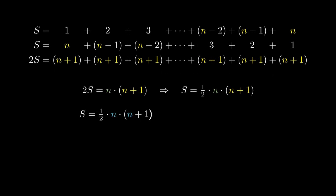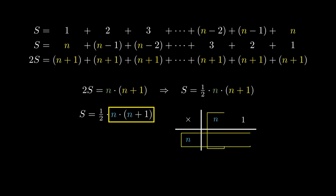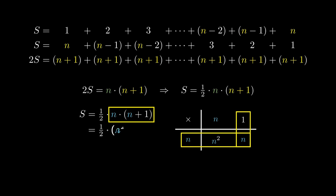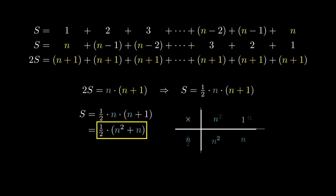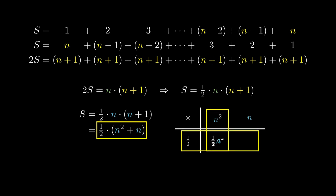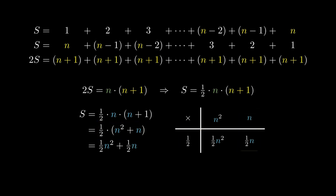We can simplify this expression with a little bit of algebra. We can place the n on the left, and the n plus 1 on the top. n multiplied by n gives us n squared. n multiplied by 1 gives us n. n times n plus 1 therefore simplifies to n squared plus n. We can repeat the calculation placing half on the left, and n squared plus n on the top. This means the product equals half n squared plus half n. This is true on any day of Christmas.